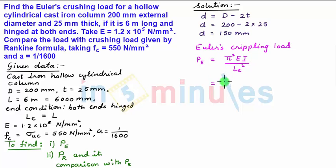we get this is equal to pi square into EI which is pi by 64 into capital D to the power 4 minus small d to the power 4 the whole upon LE. For a column with both ends hinged LE is given as L, so we have L square.